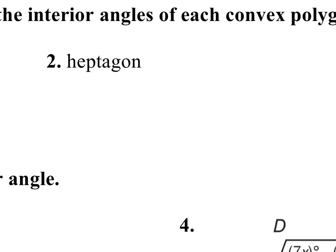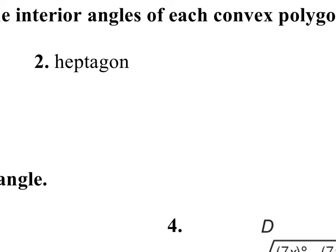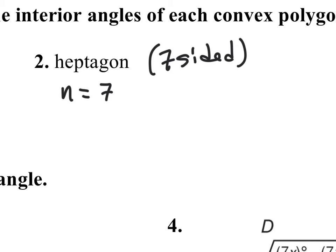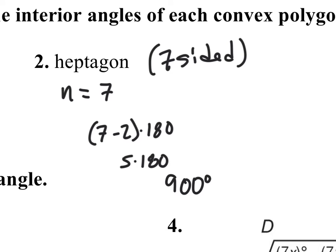Let's do the same thing for a heptagon. A heptagon is a seven-sided figure, so n equals 7. Plugging into the formula: 7 minus 2 times 180 gives us 5 times 180, which equals 900 degrees. So if you take a seven-sided figure and add up all those angles, you get 900 degrees.